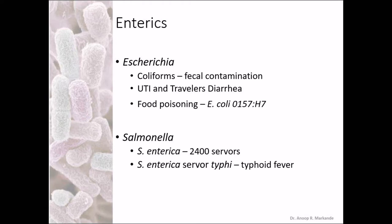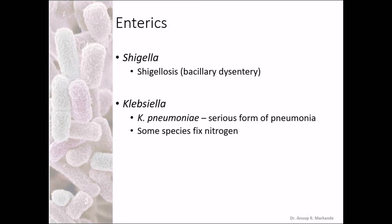Salmonella — Salmonella enterica is one of the major pathogens causing enteritis and it has 2,400 serovars. Salmonella typhi, or Salmonella enterica serovar Typhi, is known to be the causative agent of typhoid fever. Continuing with enterics: Shigella causes shigellosis, a bacillary dysentery. Klebsiella pneumoniae causes a serious form of pneumonia, while some species of Klebsiella are known to be nitrogen fixers.